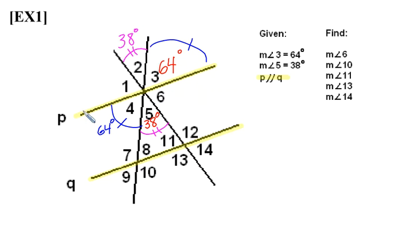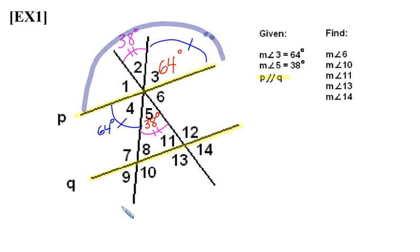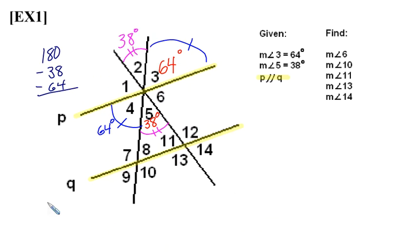Next, if we look at the three angles combined that form the top portion of line P, angles 1, 2, and 3 combine to form a straight line. In other words, angles 1, 2, and 3 will combine to be 180 degrees when their measures are added together. Using that notion, if we take 180 minus 64 minus 38, we will get the measure of angle 1, which is 78 degrees.